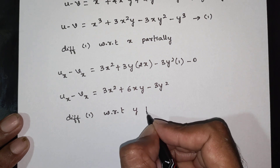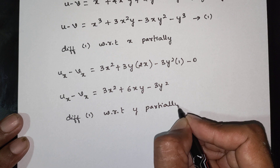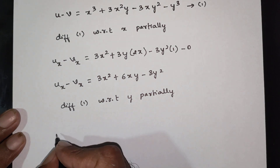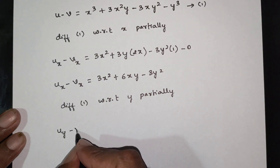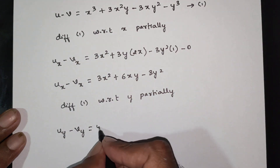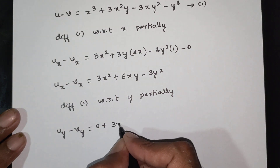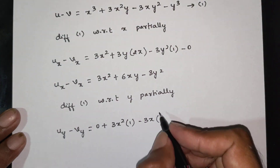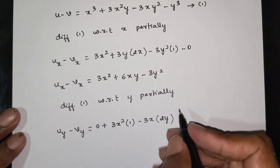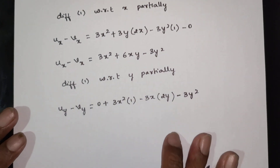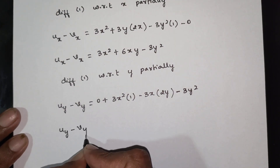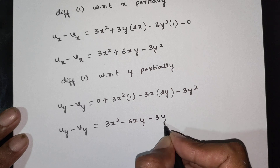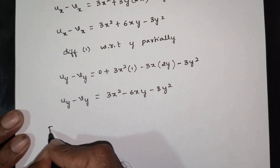Differentiating with respect to y: partial differentiation with respect to y gives uy minus vy. 3x squared is constant so differentiation of y gives 1; 3x is constant and y squared differentiates to 2y; y cubed differentiates to 3y squared. So uy minus vy is equal to 3x squared minus 6y minus 3y squared.